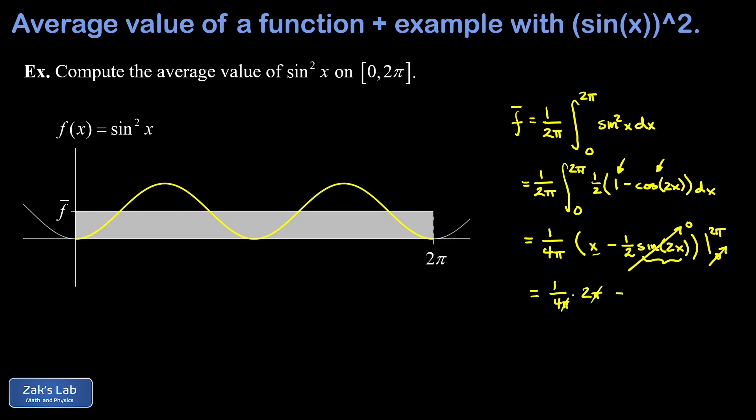So we arrive at an average value for sine squared x of one half on this interval 0 to 2π. Note that this average value will always be one half across an integer number of periods, and in fact the period of this function is π—we can see it repeating every time we go through an additional angle of π.